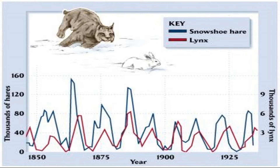The lynx and the snowshoe hare have a prey-predator relationship where the hare is the prey and the lynx is the predator. Initially, the population of the lynx was on the increase and the population of the snowshoe hare was essentially stable. Then the hare population began to decrease at the point where the lynx population was at its maximum. This decrease in the snowshoe hare population was due to predation.